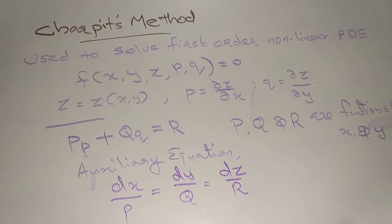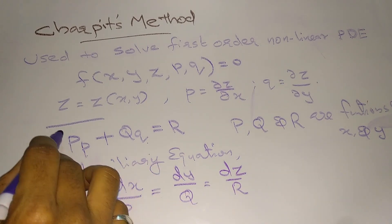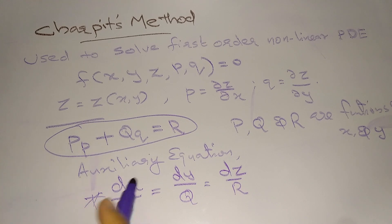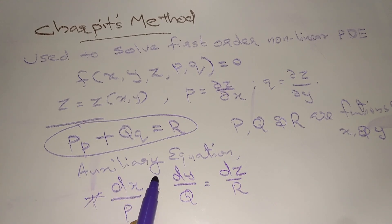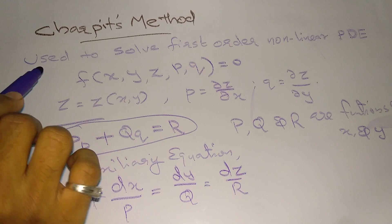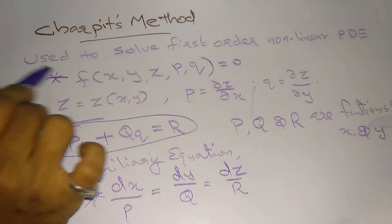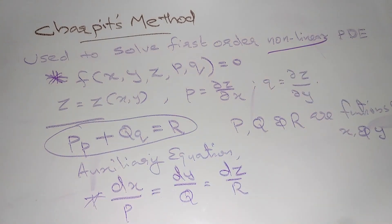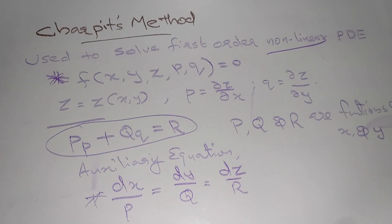After solving this auxiliary equation, we get the solution of the linear partial differential equation. Now our aim is to find the solution of the nonlinear first-order partial differential equation of the form f(x, y, z, p, q) = 0.